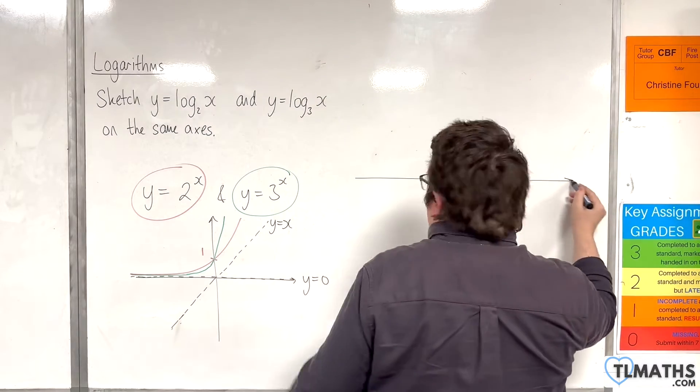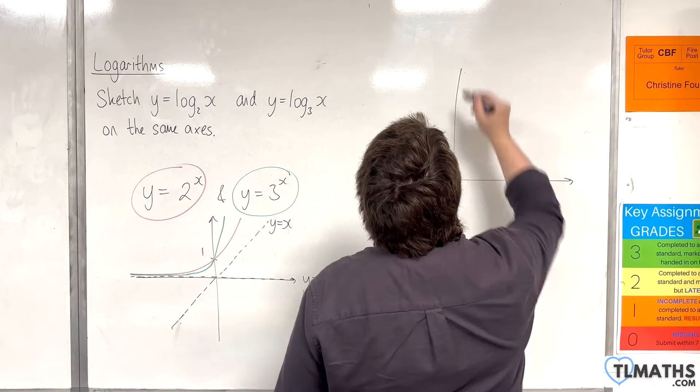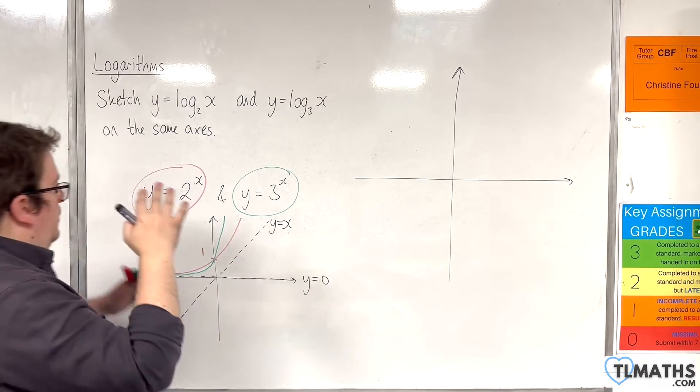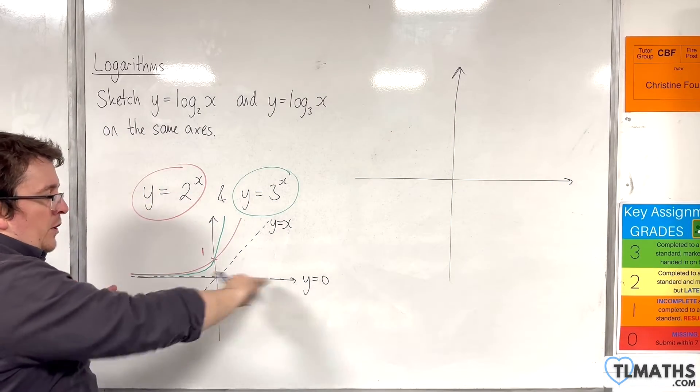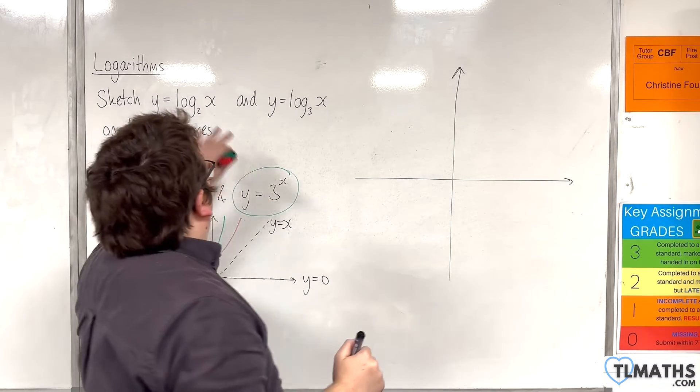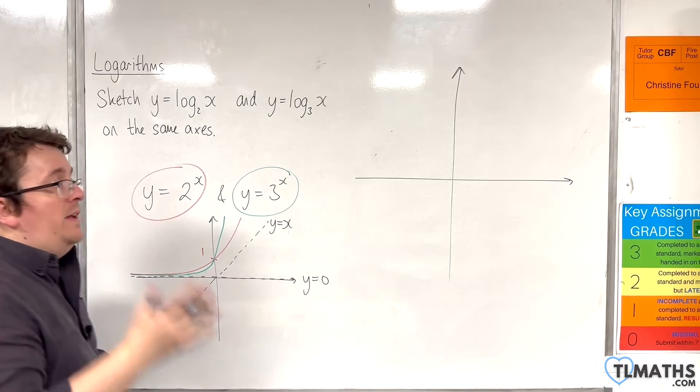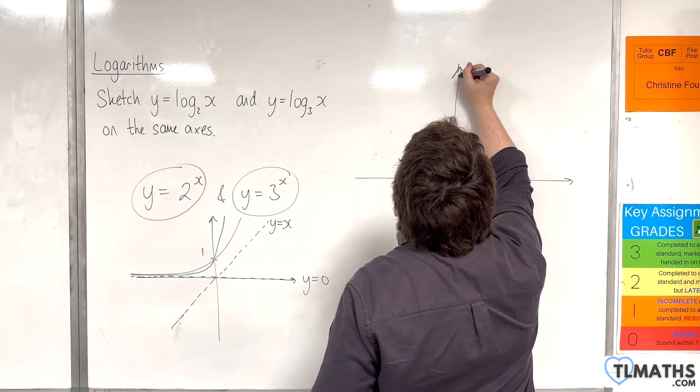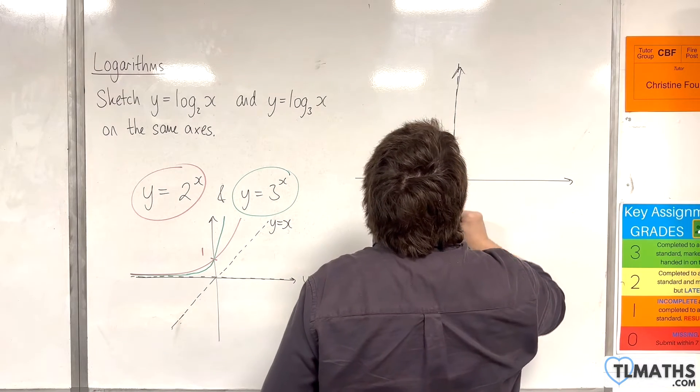So, I'm not going to draw them on the same axis. I'm going to draw them up here so they can get their own graph. Now, 2 to the x and 3 to the x have that horizontal asymptote y equals 0. So, log base 2 of x and log base 3 of x have a vertical asymptote at x equals 0. That is reflected in the line y equals x.